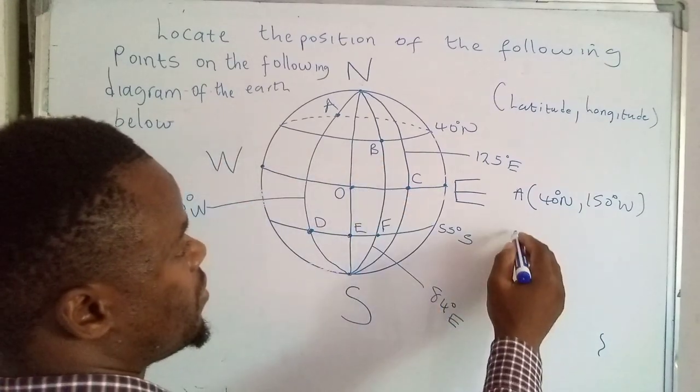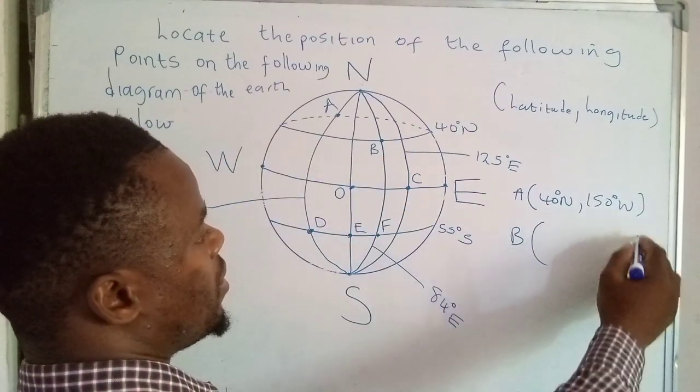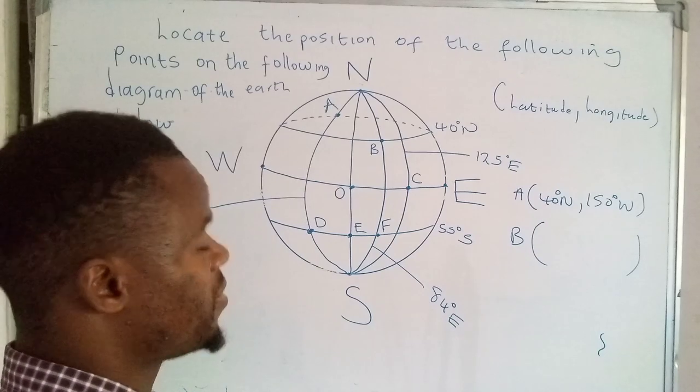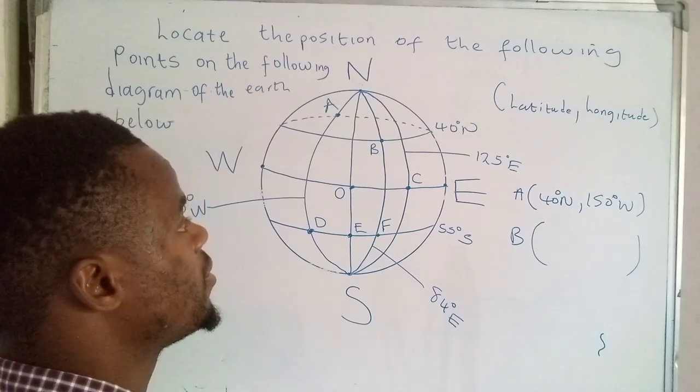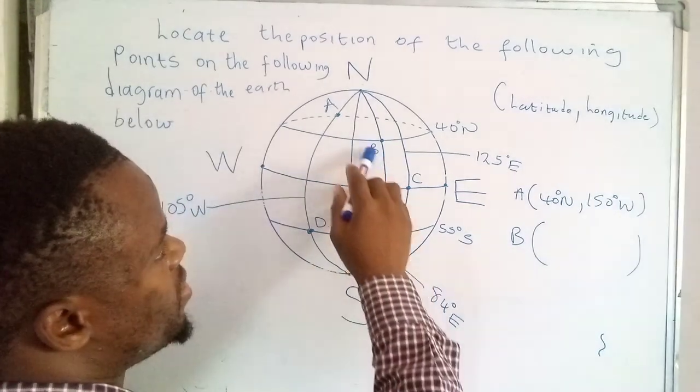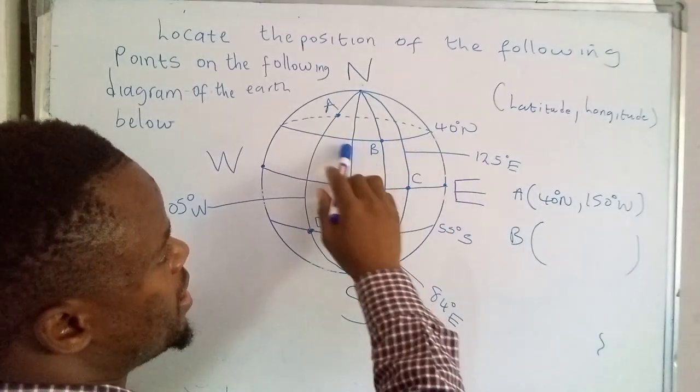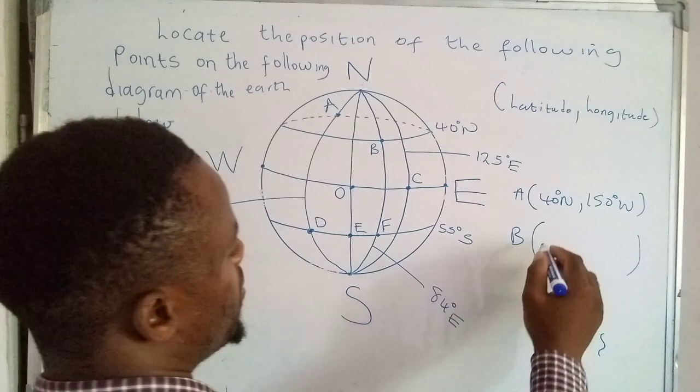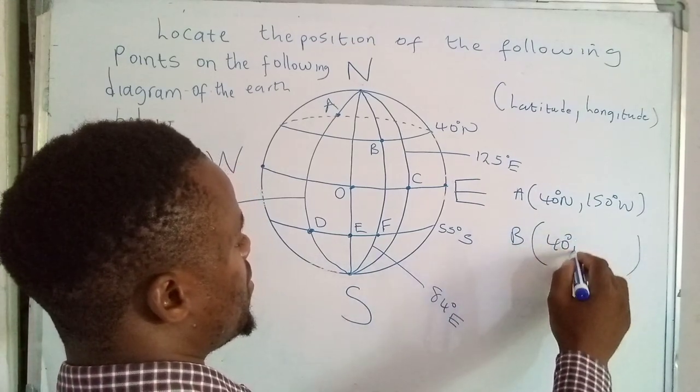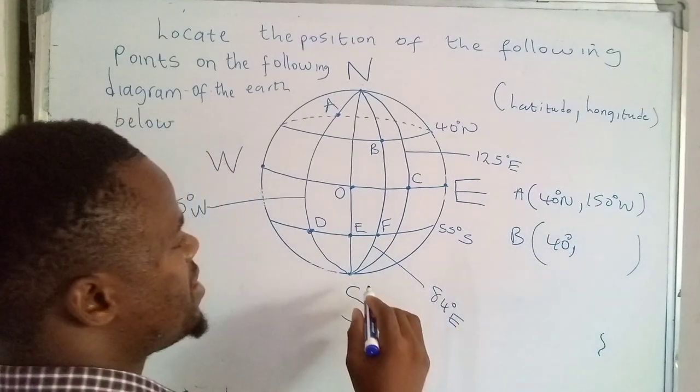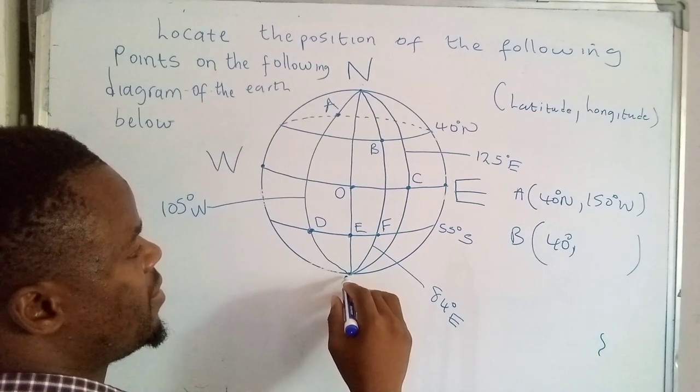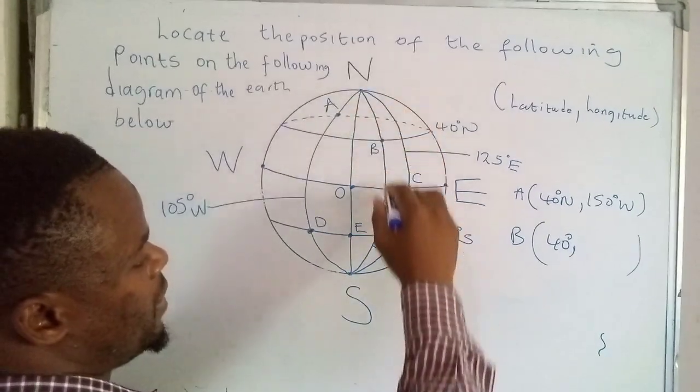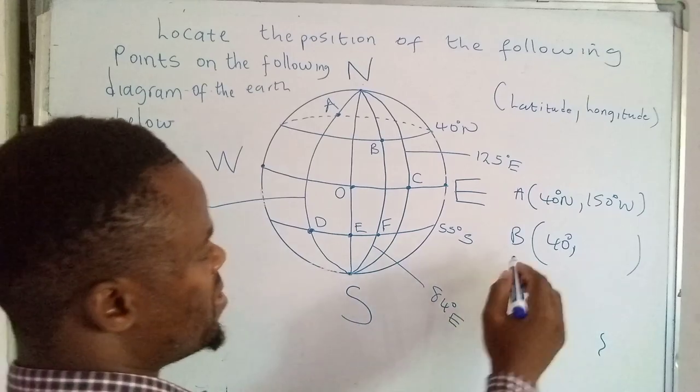Let's move on to B. We have to start with the latitude, so on what latitude is B? It's actually on 40 degrees north. And what is the longitude where it's sitting? That's 84 degrees east.